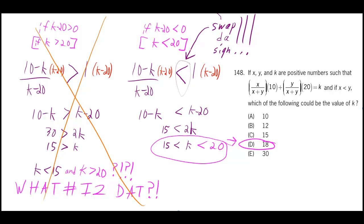So it must be this other case where k has to be less than 20. And we also found out that k is greater than 15. So we know it's a number greater than 15 and less than 20, which means that the answer is 18.